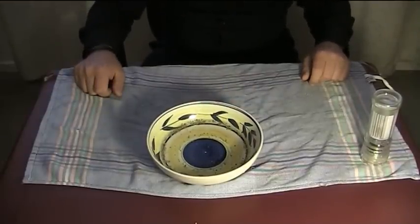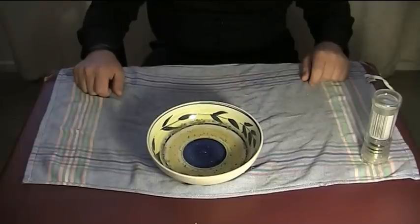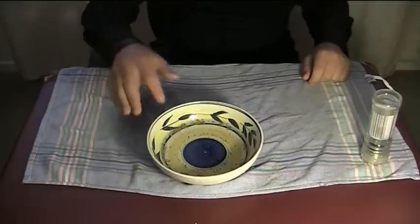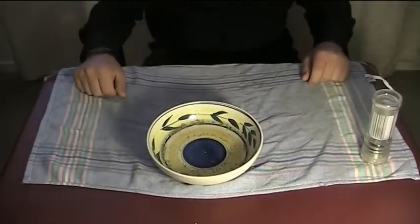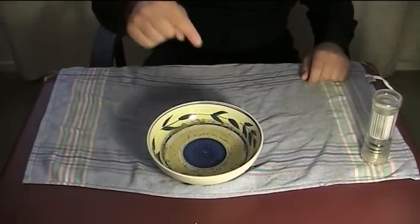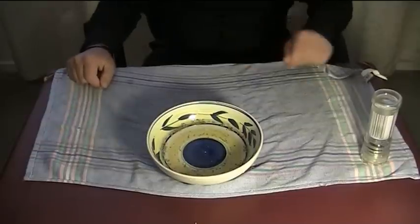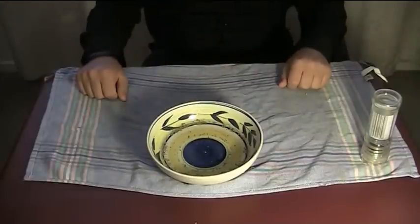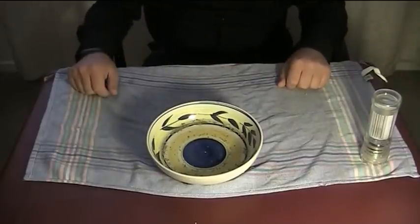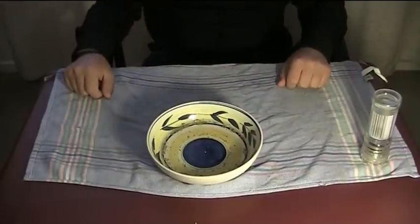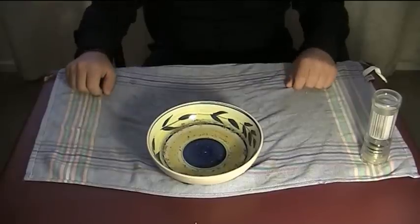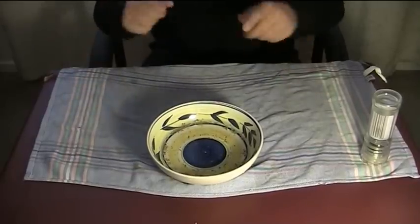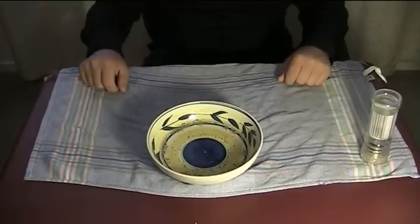A cool variation you can do is to replace the water with some milk and replace the pepper with different colours of food dye. And then when you stick your finger into the middle of the bowl with the dishwashing liquid on it, all the colours will mix together and do lots of little swirls and stuff. And that looks even cooler than this. So go ahead and give both these scientific experiments and magic tricks a try, and I'll see you all next time. Have fun and enjoy performing to your friends and family.